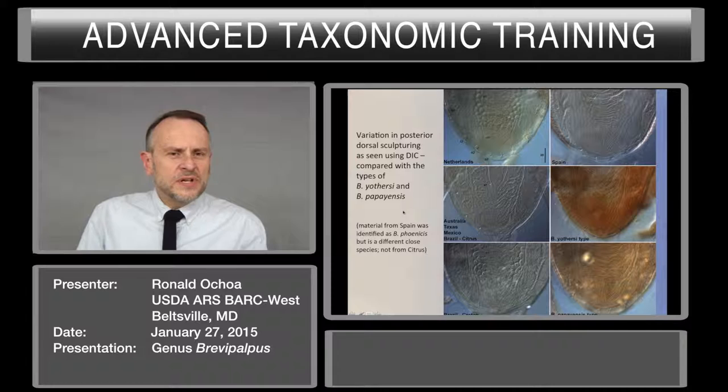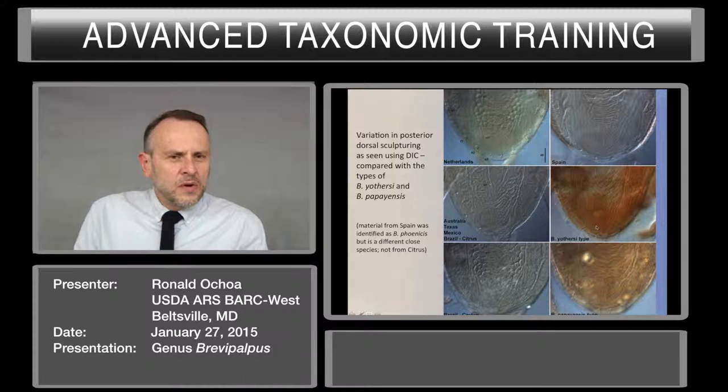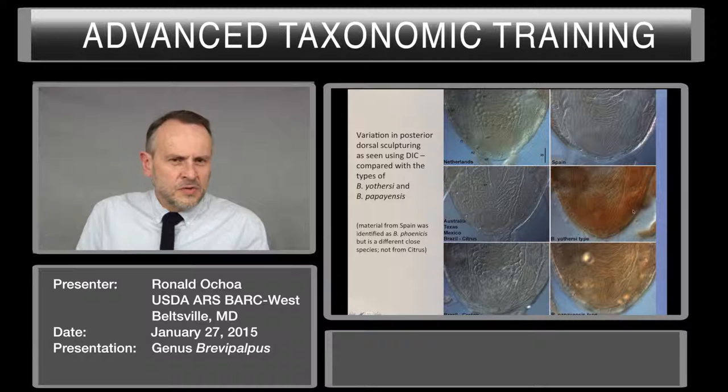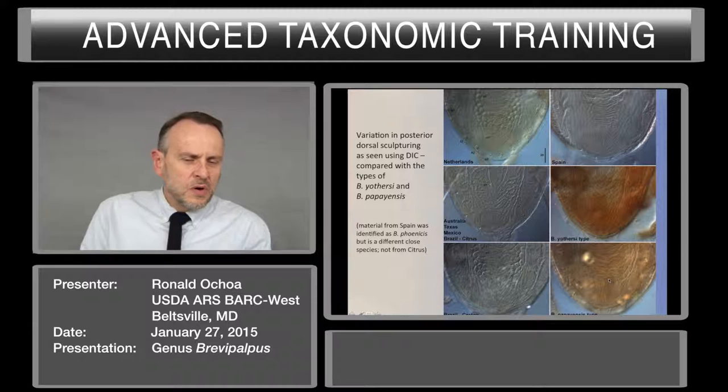Here we have Brevipalpus on the other side and Brevipalpus papayensis. The one that says Netherlands is Brevipalpus phoenicis sensu strictum. You can see below the one that says Brevipalpus on the other side — that is the type species — and also Brevipalpus from Australia, Texas, Mexico, and Brazil. You can see both still sharing the characters over the dorsum of the opisthosoma. In the right lower corner, we see Brevipalpus papayensis, a species that is located at the moment in Hawaii.